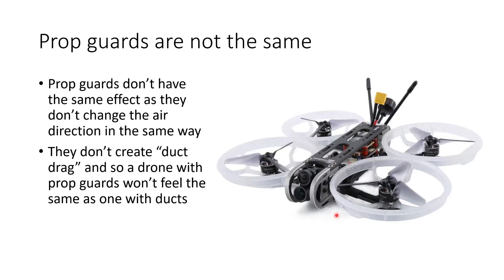I want to make it clear that prop guards are not going to have the same effect as ducts because they don't change the direction of air flowing past the propeller blades in anything like the same way. Prop guards aren't going to generate duct drag, so a drone with prop guards is not going to feel the same as one with ducts — it's not going to slow down and let you keep that subject in view.